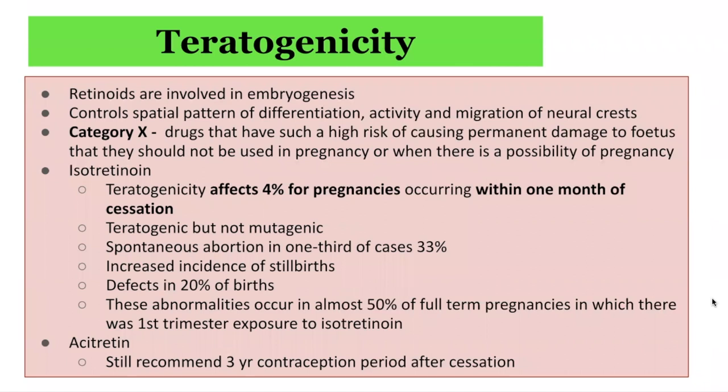Acitretin, although it does not have as long a half-life as etretinate, still has a three-year contraception period recommended. This is because in a proportion of patients on acitretin who are also ingesting alcohol, that can affect metabolism such that a small proportion of acitretin gets converted to etretinate, which has a long half-life and stays in the body for a long time.